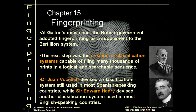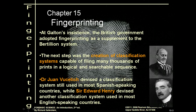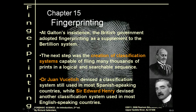Galton insisted that the British government start to look at fingerprinting versus the Bertillon system. The next logical step was figuring out how to classify all these fingerprints. There are two main systems. Dr. Juan Vucetich created really the first classification system, and his system is still used in most Spanish-speaking countries. Then there's Sir Edward Henry, who devised another classification system around the same time. Most English-speaking countries, including America, still use the Henry method.